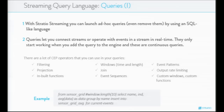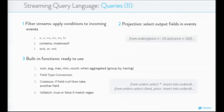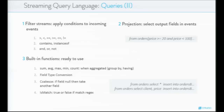With Stratio Streaming, you can launch queries or even remove them using an SQL-like language. Queries let you connect streams or operate with events in real time. They only start working when you add the query to the engine, and these are continuous queries. There are many CEP operators available: filtering, projection, built-in functions, several window types, joins between streams, event sequences, event patterns, output rate limiting, and custom windows or custom functions. Built-in functions ready to use include sum, average, max, min, field type conversion, and several others.